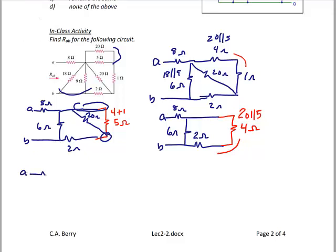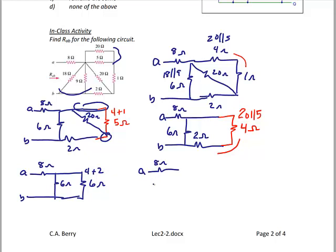At terminal A I have the 8 ohm resistor. The 6 ohm resistor resulting from 4 plus 2, and the other 6 ohm resistor, are in parallel: 6 in parallel with 6 yields 3 ohms. Finally, RAB equals 8 plus 3, which equals 11 ohms.